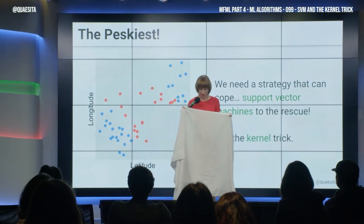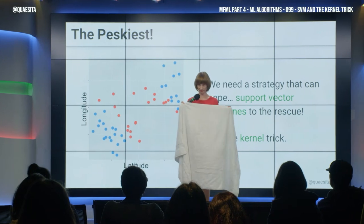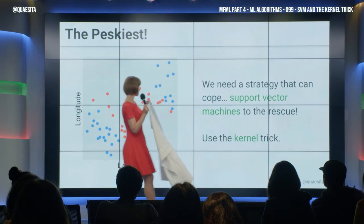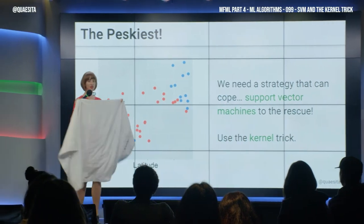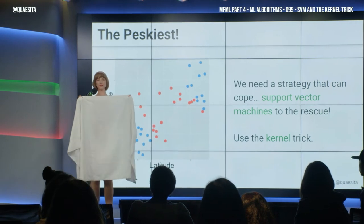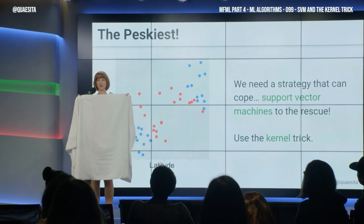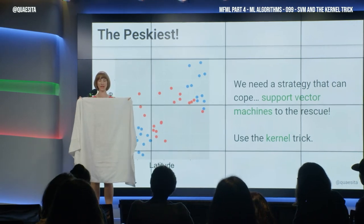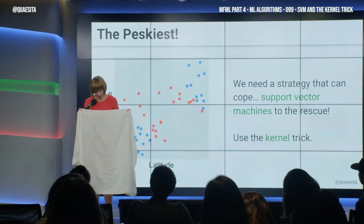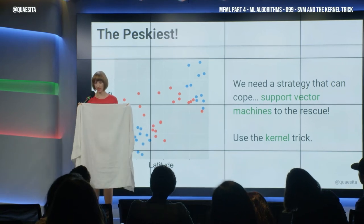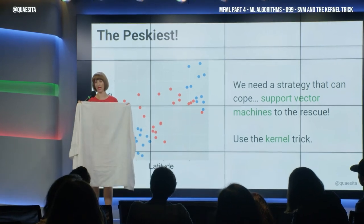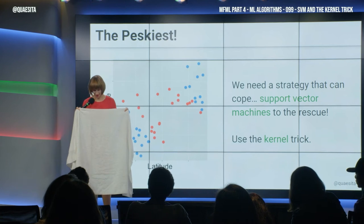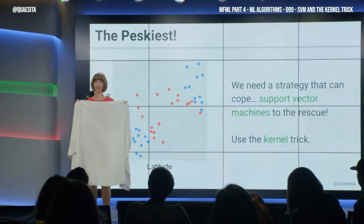Now I need you to use your imagination. Do your best, and imagine this same thing on my towel — red ones in the center, blue ones around them. And you need to use a straight thing — a line, a plane, a hyperplane, whatever — to separate the red from the blue.